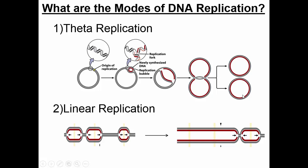I just want to give you the contrast between that and the linear replication that occurs in eukaryotic organisms such as humans. In humans, we have multiple replication bubbles per chromosome — probably hundreds of them. Prokaryotes on the top only have one replication bubble. The reason is that the genome is too large to have one replication bubble and replicate in the appropriate amount of time, so in eukaryotes you need these multiple replication bubbles.